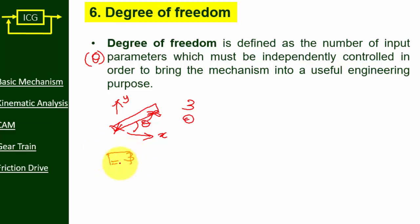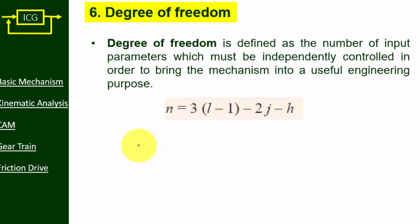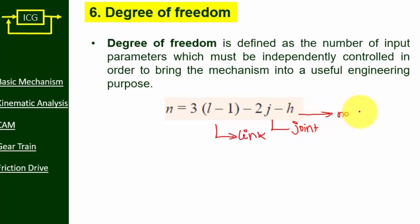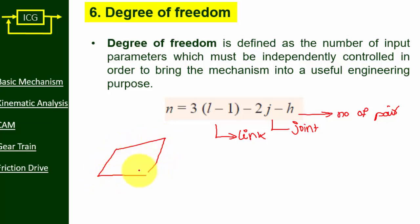The formula to find the degree of freedom is: n = 3(l − 1) − 2j − h, where l represents the number of links, j represents the number of joints, and h represents the number of higher pairs, namely gear or cam arrangements.